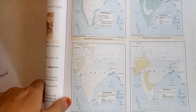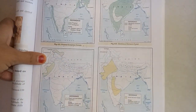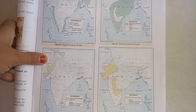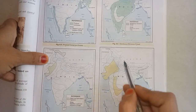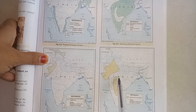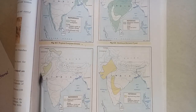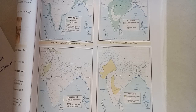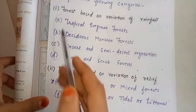Now the next type is scrub and thorn forest. These areas in Rajasthan, Kutch, and parts of the Deccan are covered by this type of forest. I hope all four points are clear to everyone: tropical evergreen, deciduous, desert and semi-desert, and thorn and scrub forest.